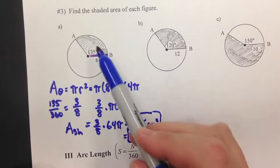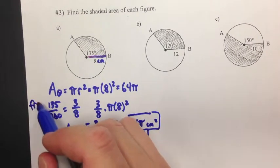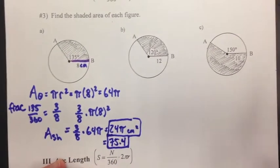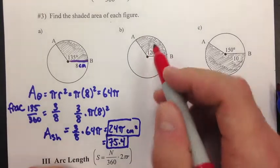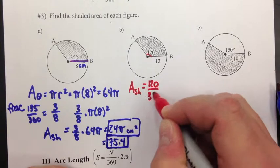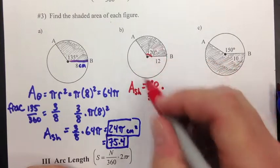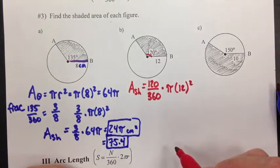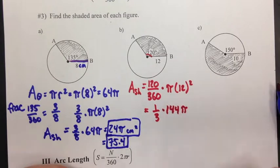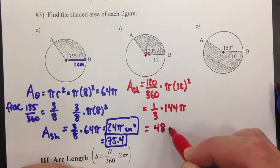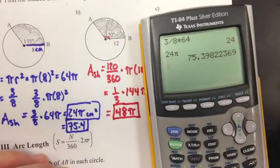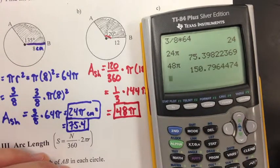So all you do is take the fraction of the circle being shaded — which is 3/8 — multiply that by the total area, and you get the shaded area. For part b, the central angle is 120. Area shaded equals 120 over 360, which is the fraction, times the whole area pi times 12 squared. That reduces to 1/3 times 144 pi. One-third times 144 is 48, giving us 48 pi.